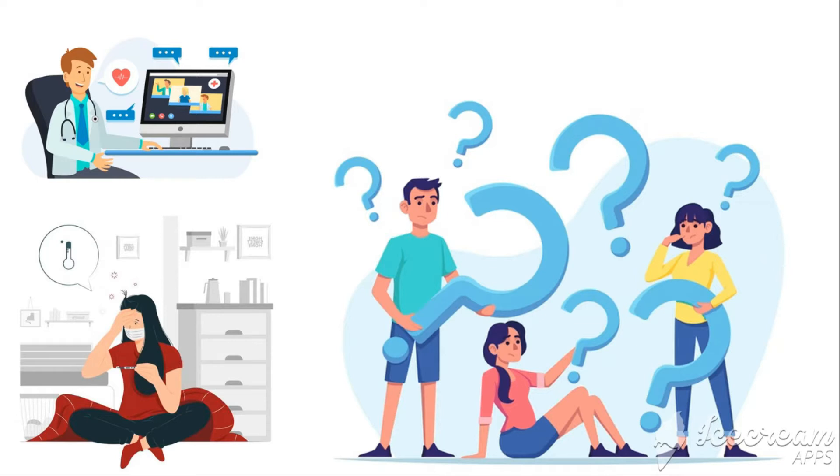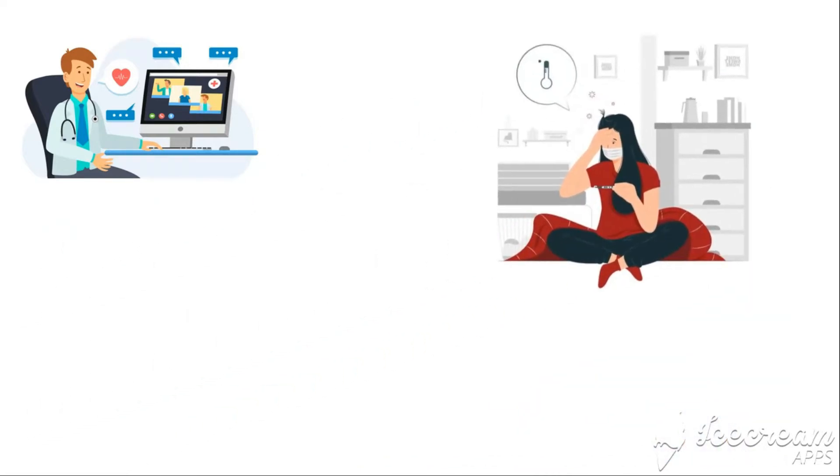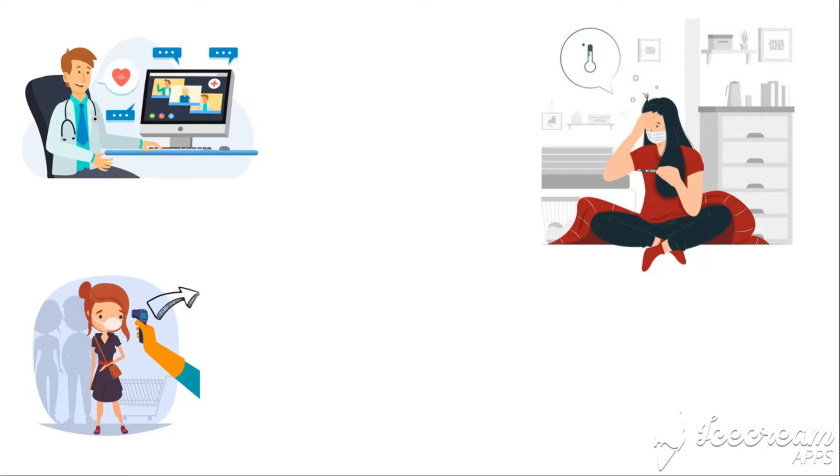Before we start, let's quickly see the normal temperature regulation in our body. Normal body temperature in a person is maintained at a constant range from 98 to 98.6 Fahrenheit, or 36.6 to 37 in Celsius. This critical range is known as the temperature set point in humans.